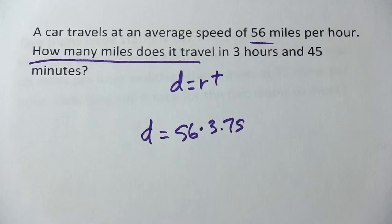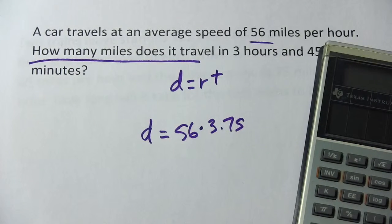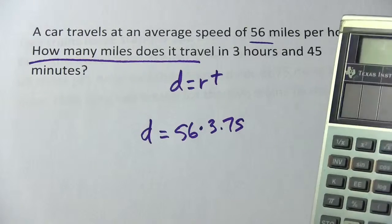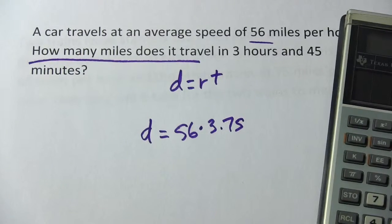So we're just going to multiply 56 times 3.75, and we get 210 miles.